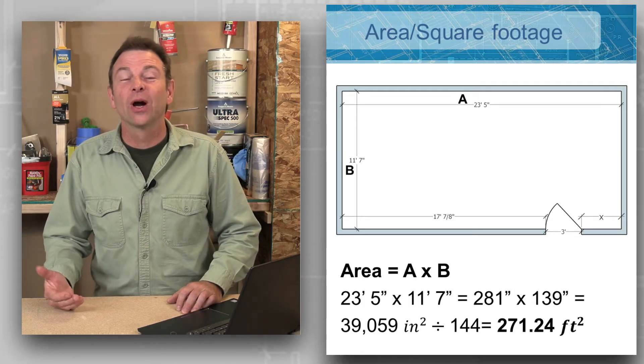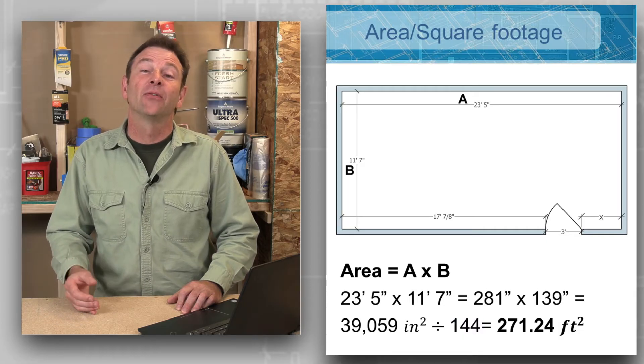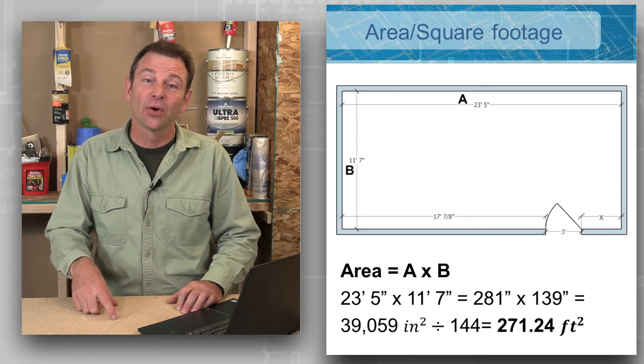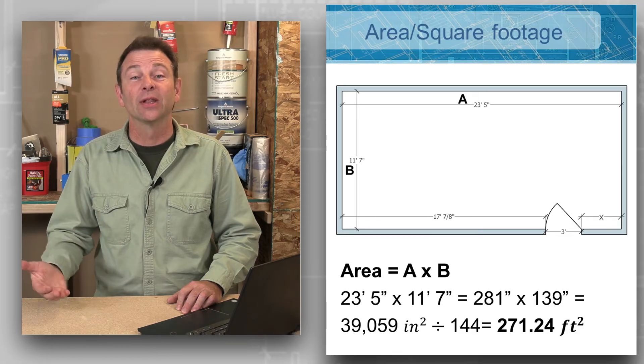So if you're wondering where my 144 came from that we divided our square inches by, it's very simple. For every square foot, there is 144 square inches in that foot. So when we divide it, we end up with our square feet.